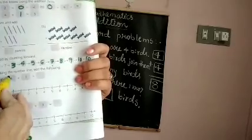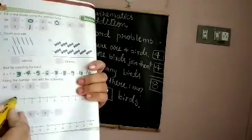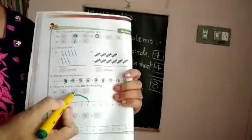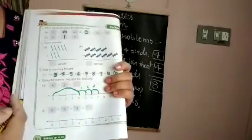Now use the number line to add: four plus three equals blank. Start from zero and reach four on the number line. From four, jump three steps forward — one, two, three. You reach seven. So the answer is seven. Write seven in the box.